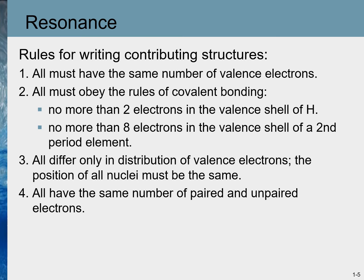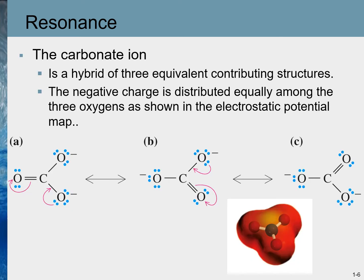Only the positions of pi bonds and lone pairs can change. The fourth rule is that all structures must have the same number of paired and unpaired electrons — you cannot gain or lose electrons when writing resonance contributing structures. Many times, not all structures will contribute equally to the resonance hybrid. For example, the carbonate ion has three contributing structures, and in this case all three contribute equally, so we call them equivalent contributing structures.